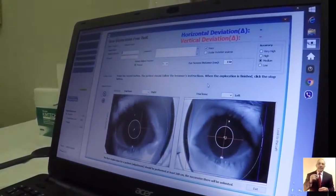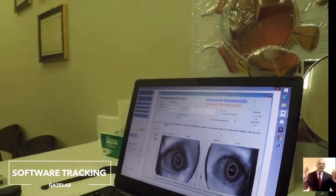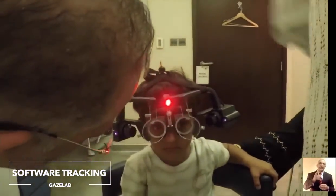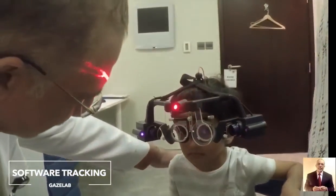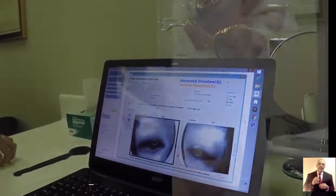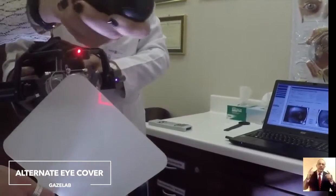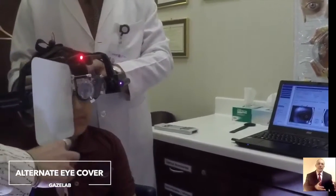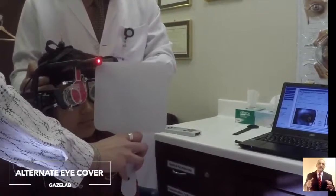This video-oculographic medical device is composed of two infrared cameras which record eye movement very accurately and a laser-projecting light which guides the patient's gaze at any point in space. The whole system shifts easily over the patient's head. The laser-projecting system guides the patient's gaze at any point and the camera films the two eyes and sends the images to the computer which analyzes the images and measures the amount of deviation between the two eyes.